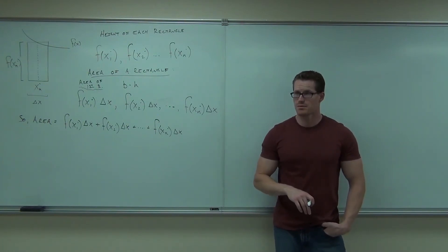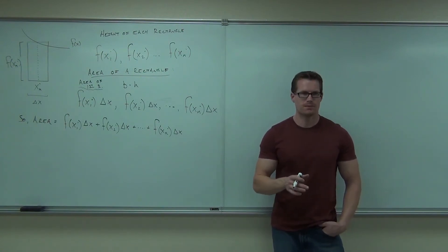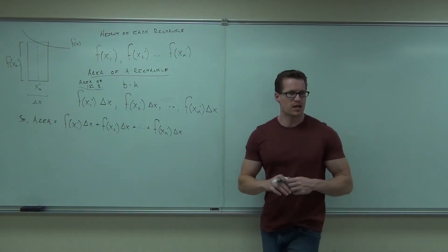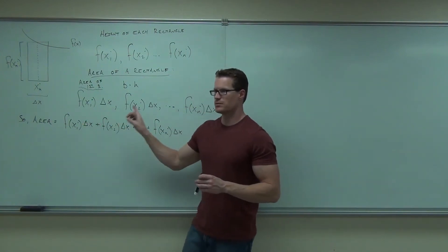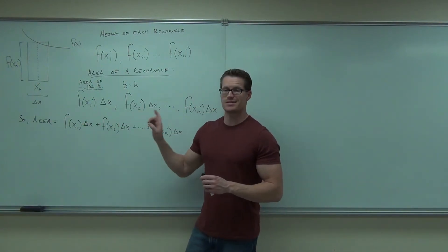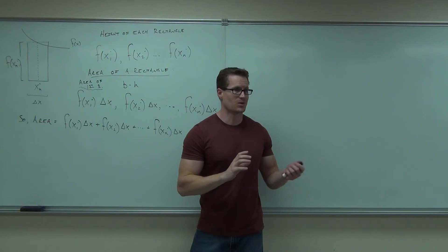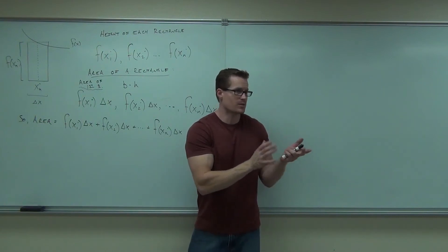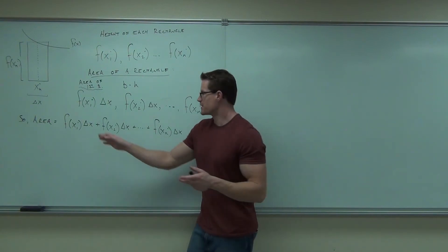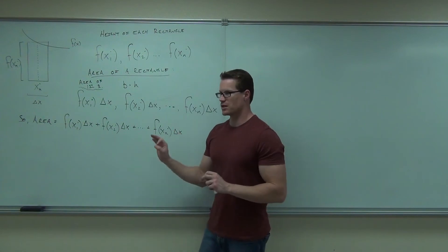Is it going to be based on x or k? What are we actually doing? Are we changing delta x from rectangle to rectangle? No, that stays the same. In fact, if you wanted to factor it out, you could do that. It's in each one of them — some people do that to prove this. But delta x is in every single one of them, so that can't change.